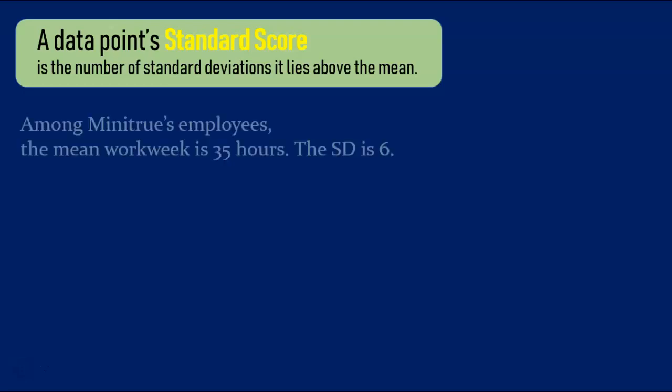First and foremost, a data point's standard score is the number of standard deviations it lies above the mean. Some examples will make this idea clear. Among MiniTrue's employees, the mean workweek is 35 hours, and the standard deviation is 6 hours.